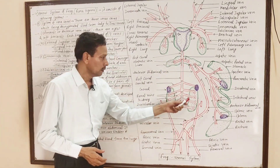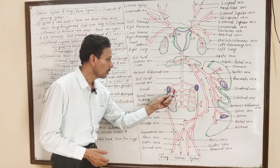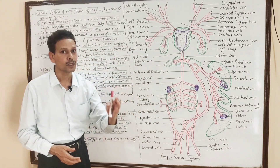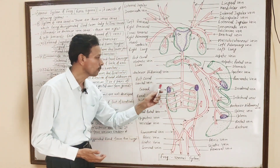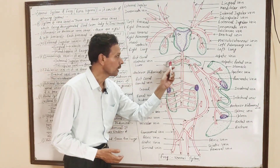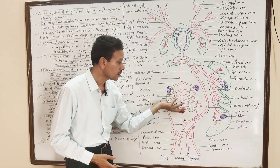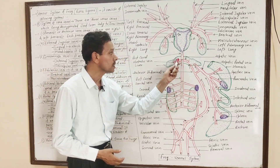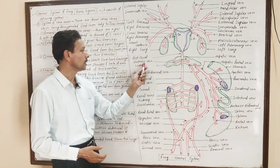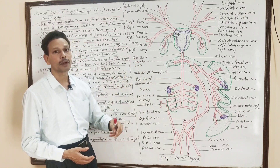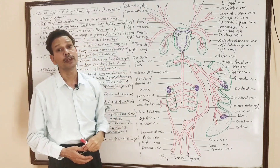The posterior vena cava brings blood from the kidneys through five or six pairs of renal veins, a pair of genital veins from the gonads, and from the liver, a pair of hepatic veins. All these — renal veins, genital veins, and hepatic veins — collectively constitute one large blood vessel: the postcaval or posterior vena cava, which opens into the additional chamber, sinus venosus.